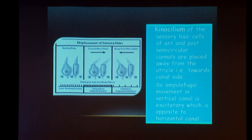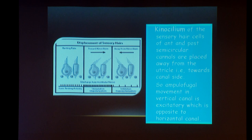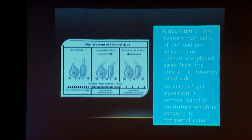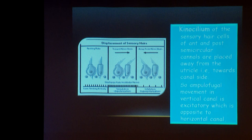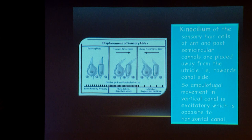The second law states that in the horizontal canal, ampullopetal movement — endolymph flowing toward the utricle — causes excitation, whereas for the vertical canals it is the opposite: ampullofugal movement causes excitation. This is because of the placement of the kinocilium. For the horizontal canal, the kinocilium is placed towards the utricle, so ampullopetal movement causes the stereocilia to beat towards the kinocilium, opening ionic channels and causing depolarization. For the vertical canals, the kinocilium is towards the canalicular side, so ampullofugal movement of endolymph opens the channel and causes depolarization.